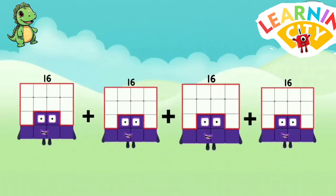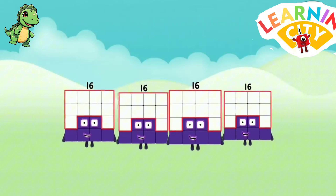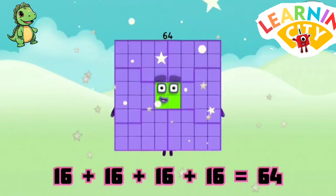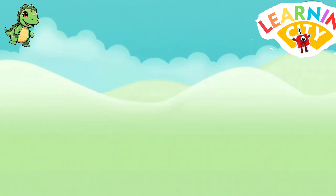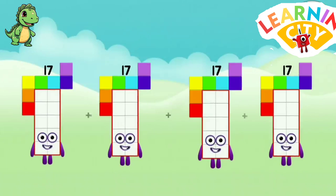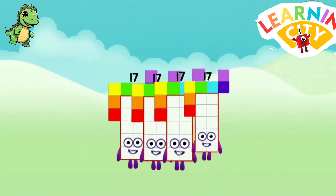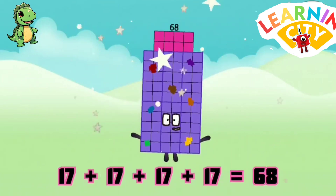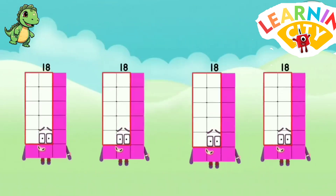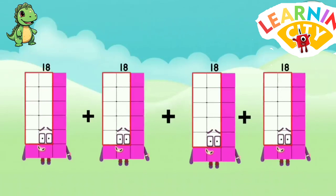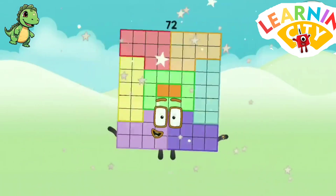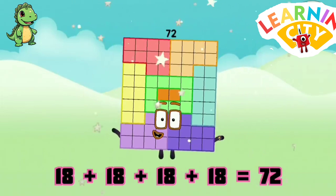16 plus 16 plus 16 plus 16 equals 64. 17 plus 17 plus 17 plus 17 equals 68. 18 plus 18 plus 18 plus 18 equals 72.